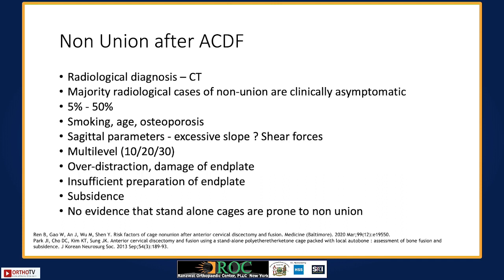Non-union after ACDF is, in clinical experience, very rare despite literature reporting incidence of 5 to 50%. Symptomatic non-unions are particularly uncommon; most are radiological findings. Risk factors include chronic smoking, elderly age, and osteoporosis. Newer biomechanical studies also suggest poor cervical sagittal balance with excessive slope creates shear forces predisposing to non-union. Multi-level ACDFs also increase risk: single-level non-union is quoted at 10%, two-level at 20%, and three-level at 30%.